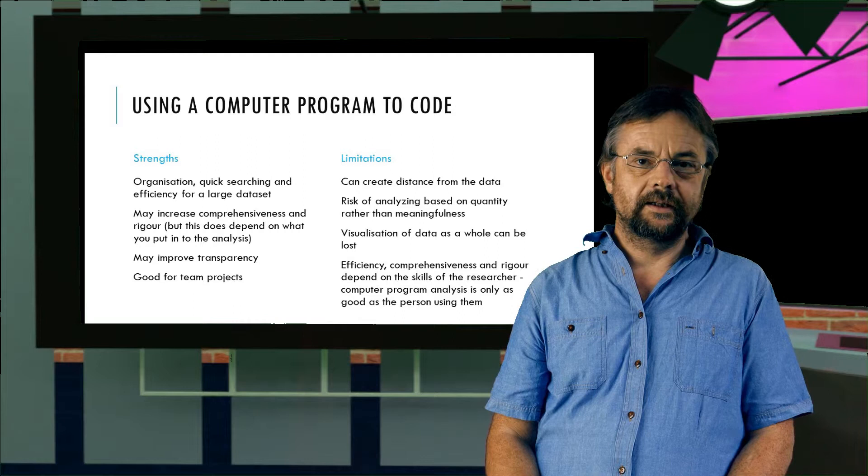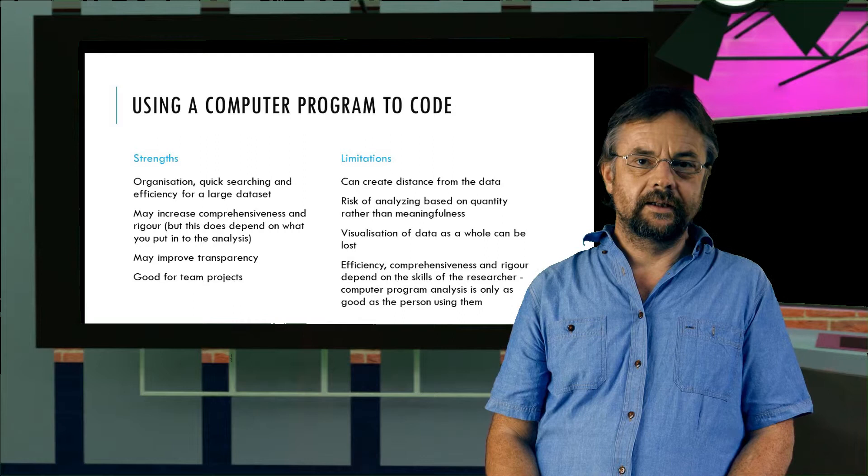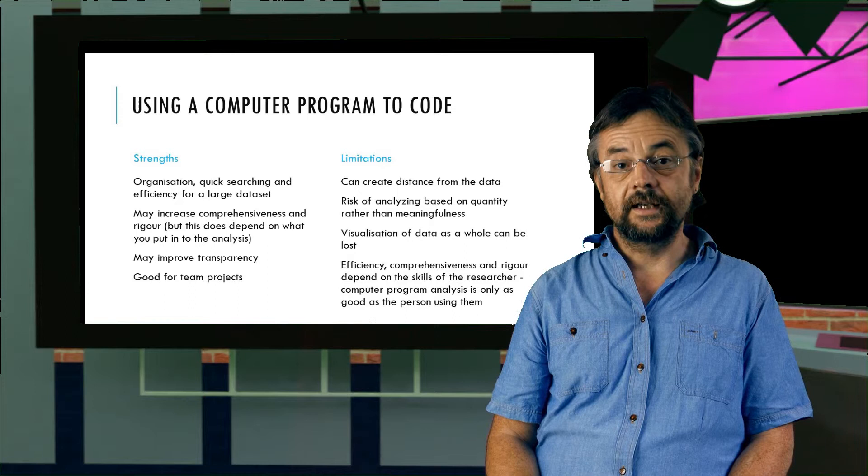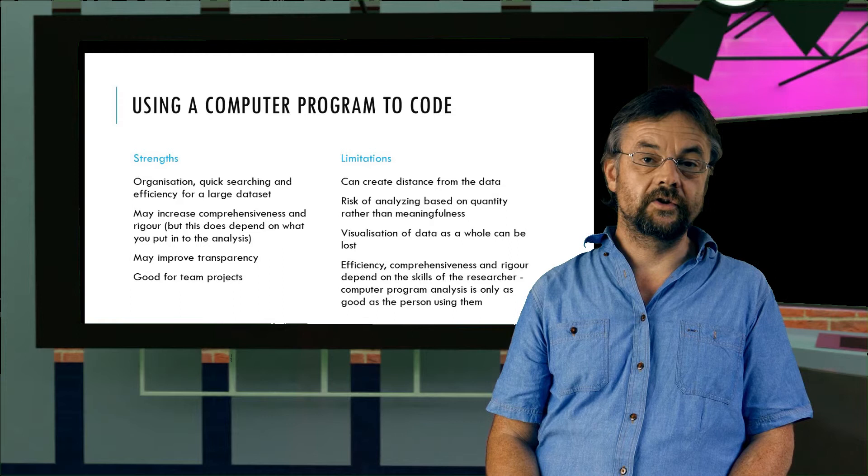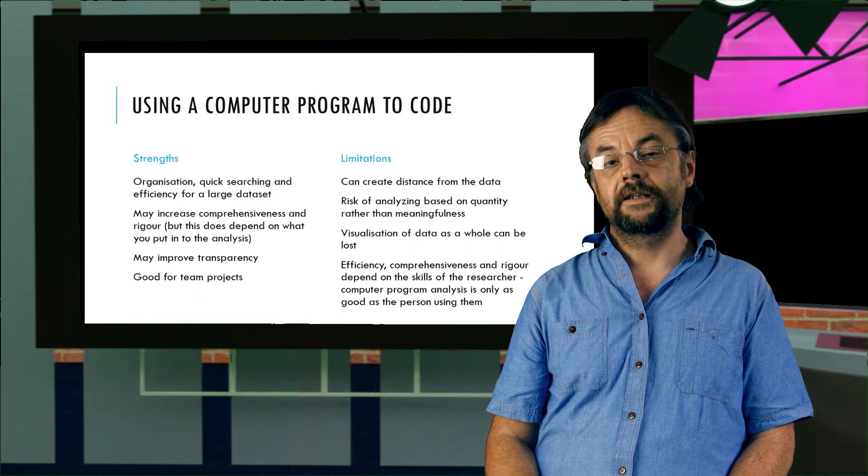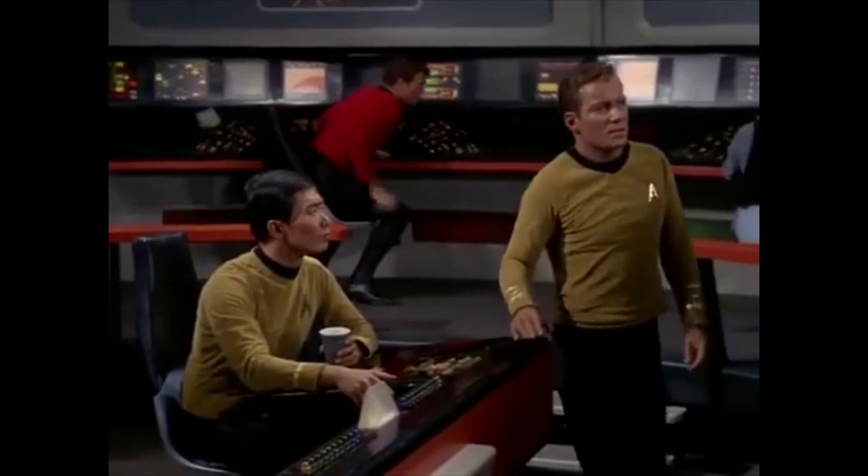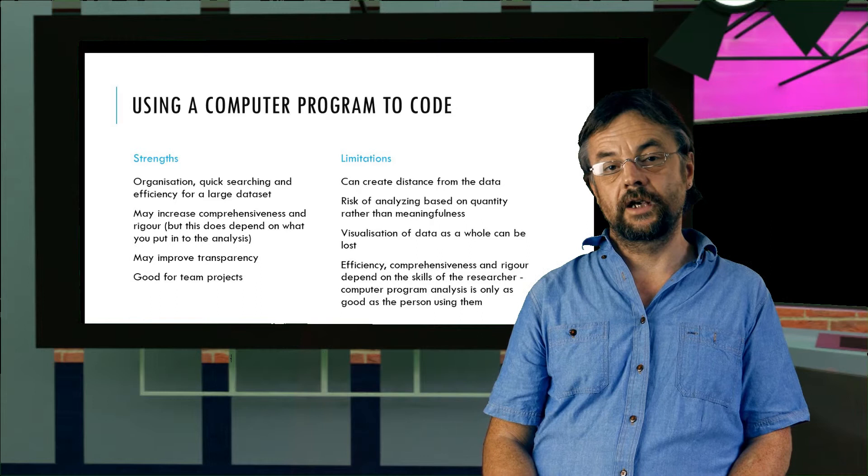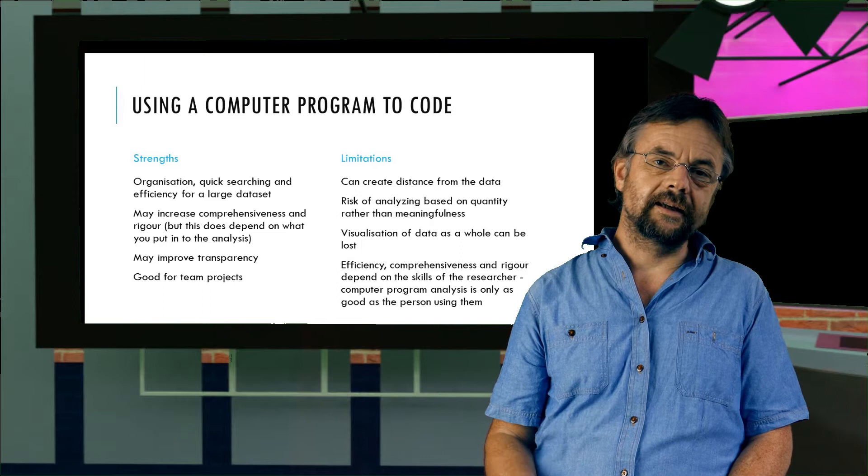Finally, just a word about using computer software to code your data. There are a number of programs that are out there. They're good in terms of helping you organize your data and great for conducting quick searches of your data. Sometimes they're used because people believe they improve the rigor of their analysis. Now, anything done with a computer program sounds like it's professional and scientific. Now, whilst computer software is useful, particularly when you're sharing analysis amongst a team, beware of falling into this trap of scientism that is actually a shorthand for positivism or quantitative research.